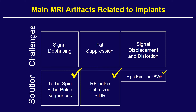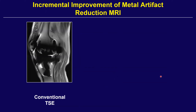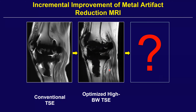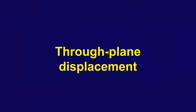This represents the evolution of metal suppression. With conventional FSE/TSE, we have lots of distortion and signal pileup. When we apply optimized high bandwidth TSE, we get significant improvement — less distortion, less signal displacement, and sharper images with better contrast. However, we are not fully there yet, because the through-plane displacement in the slice encoding direction has not been addressed. Sometimes you get high bandwidth images that look pretty good, but if you flip to a coronal scout with thick slices, you can see how bad the through-plane displacement is — almost a shepherd's curve in a distal femur tumor arthroplasty case.